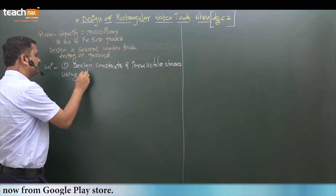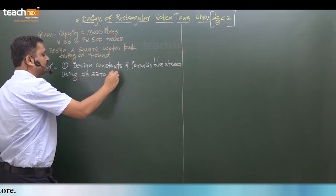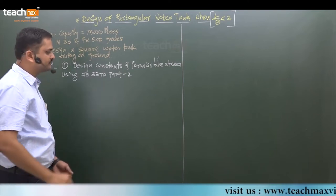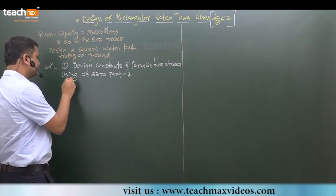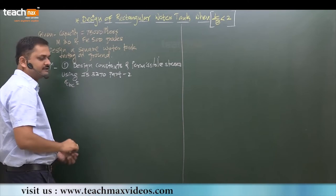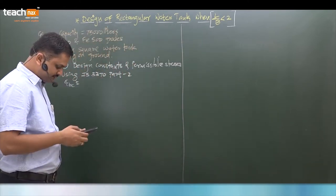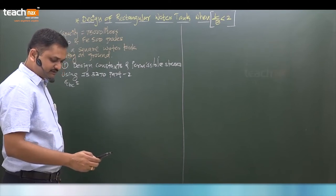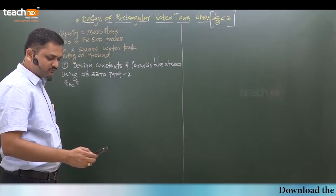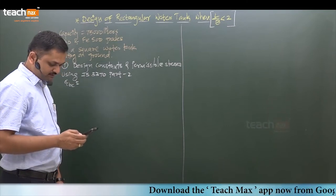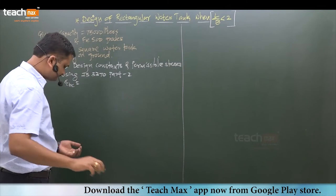Using IS 3370 Part 2, first we consider Sigma CBC for M30 from table number 2. It is available for permissible stresses in concrete. For M30, this value is 10.